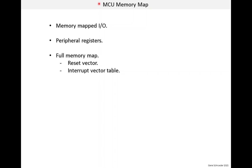It's difficult with topics like this to know at what level to start. At the beginning of the course, I said it would be good to have some knowledge of computer concepts, so I'll assume you know the concepts of memory addresses. If not, I suggest you Google 'address space' and read some articles — there's a pretty good Wikipedia article on it. I'll start with the concept of memory mapped I/O, which is critical to understanding memory maps of any computing system, tiny or large. I'll then continue by looking at peripheral registers, then the full memory map for the MCU, including special memory locations such as the reset vector and the interrupt vector table.